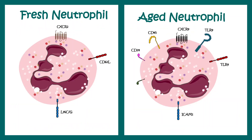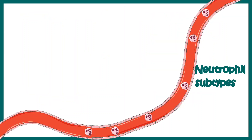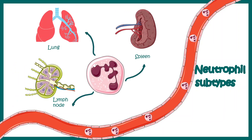Neutrophils also differ depending on their age — a fresh neutrophil is very different from an aged neutrophil in terms of surface molecule expression. Circulating neutrophils are really different from one another, showing huge heterogeneity within the population. Depending on where they end up — whether the lung, spleen, or lymph node — they become slightly different from their counterparts. This is an active area of research focused on identifying neutrophil subgroups with specific functions.